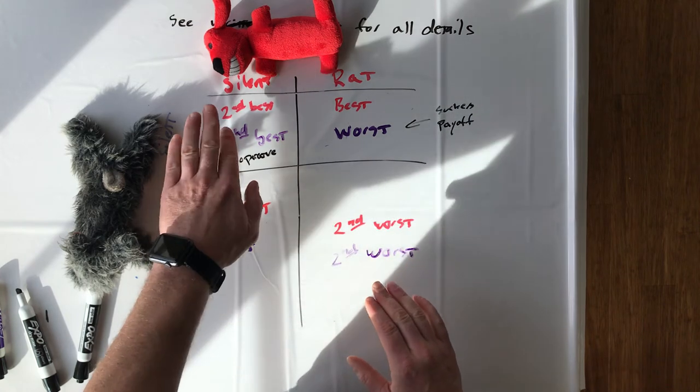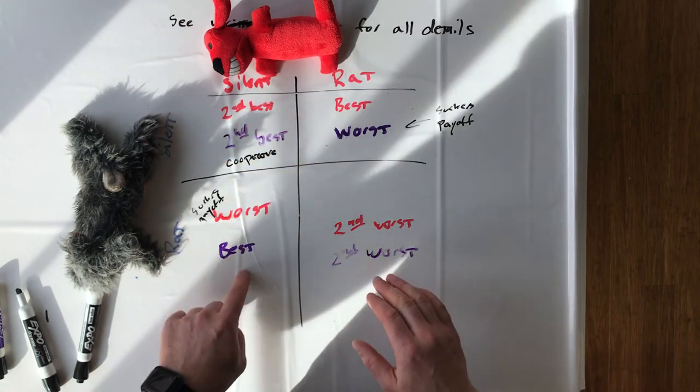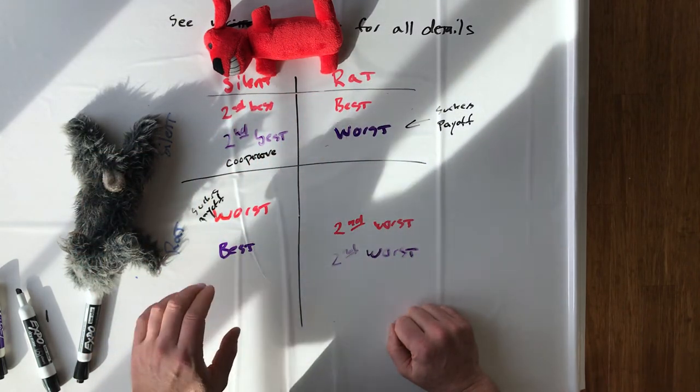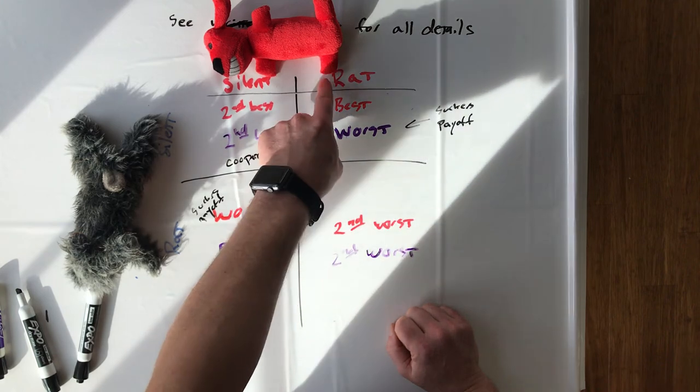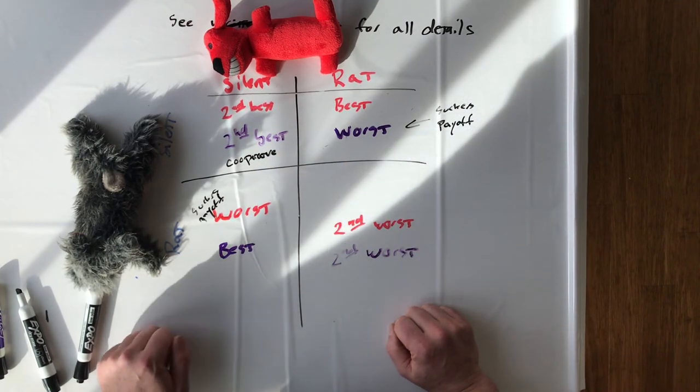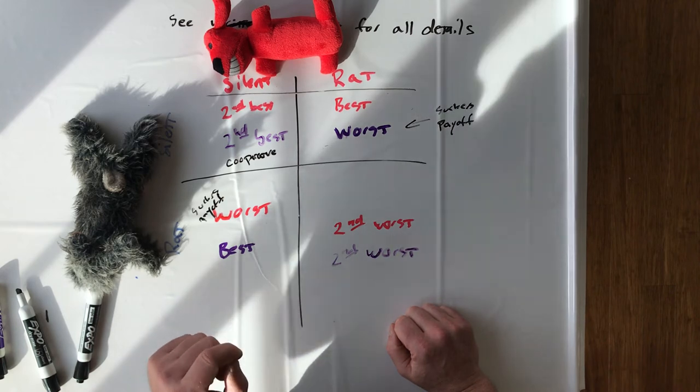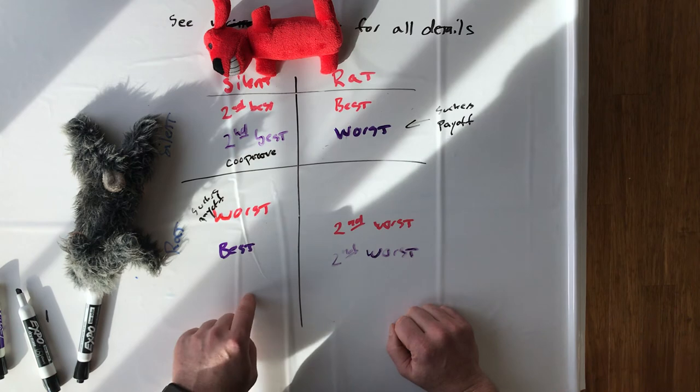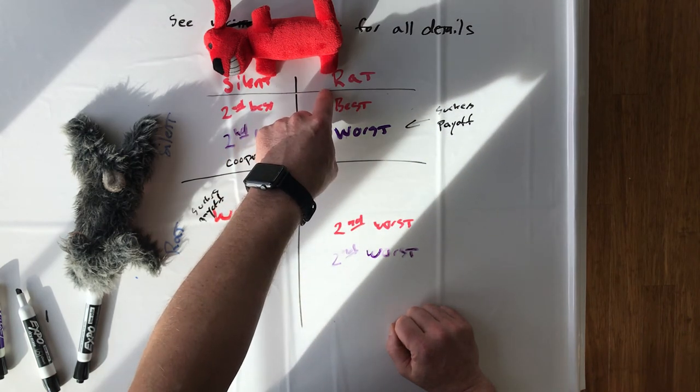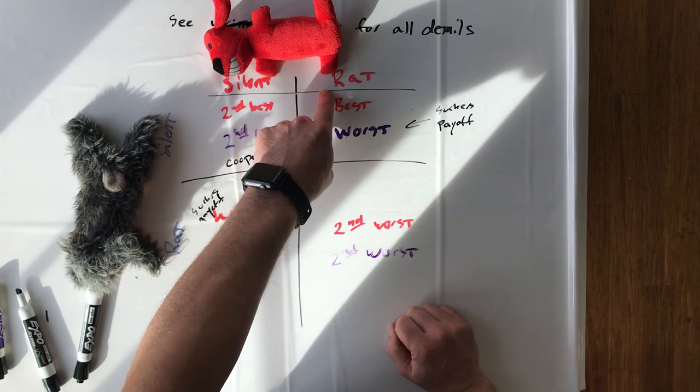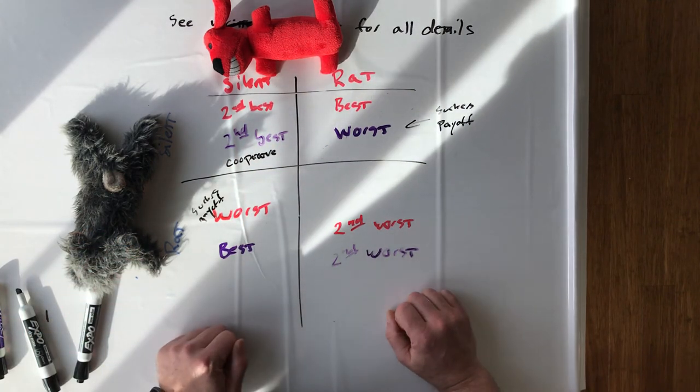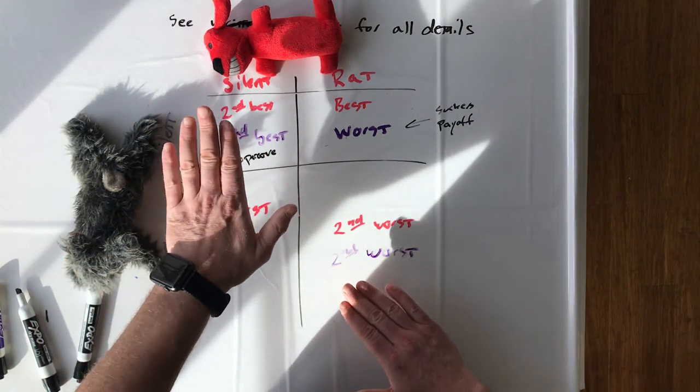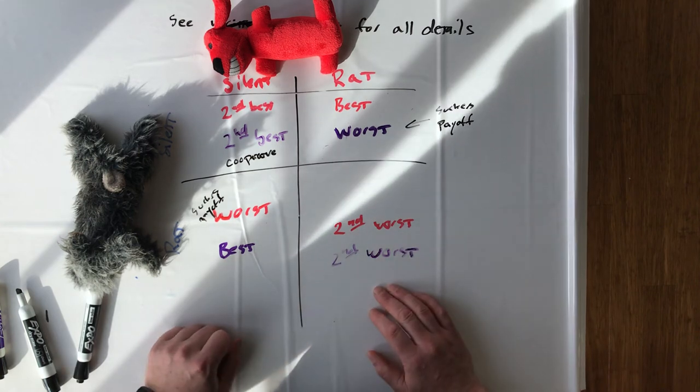And that's the trap. The fact that if the payoffs are structured like this, then both parties, if they're rational, and again if these are the only considerations, both parties will do exactly the same thing, which is rat each other out. So if you are stuck in a prisoner's dilemma like this, to get out of it, you have to do something which changes the way the payoffs are structured. You have to make it so that it's no longer better for both parties to rat, no matter what the other party does. And that's where things like personal connections, friendships, or threats of violence come in, which change the payoff structure because we're no longer just talking about number of years.